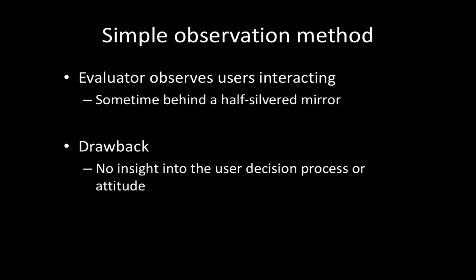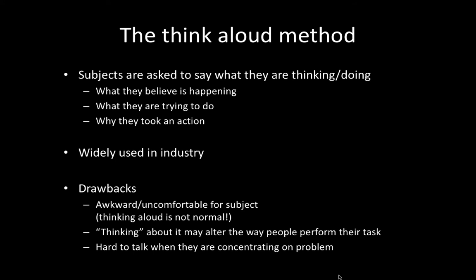The simple observation method — also called silent observer — is very simple: the person sits down and you watch. You don't do anything except observe. You can't ask questions, you can't talk to them. This is most comfortable for the users since there's nothing awkward going on, but you don't really understand how users are making their decisions or if they're frustrated unless it's obvious from body language. You could follow up in the interview but can't ask questions in the moment.